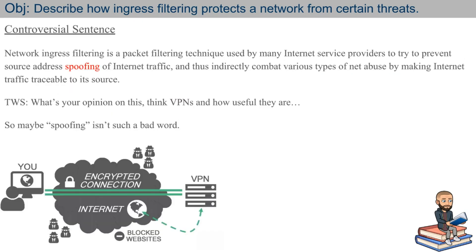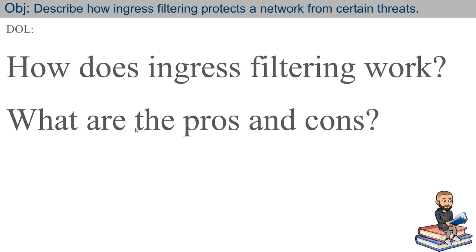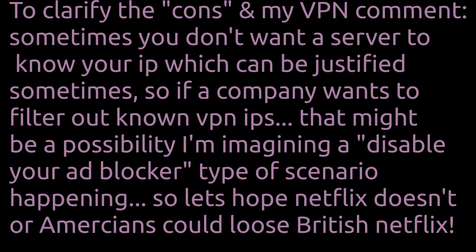To summarize: network ingress filtering is a packet filtering technique used by many internet service providers (ISPs) to try to prevent source address spoofing of internet traffic, and thus indirectly combat various types of net abuse by making internet traffic traceable to its source. Think about VPNs and how they relate to this concept. For more reading, check out BCP 84, BCP 38 — these are defined by RFC 2827 — and RFC 3704 would be the one to read after that. All of these readings will help you understand ingress filtering better.